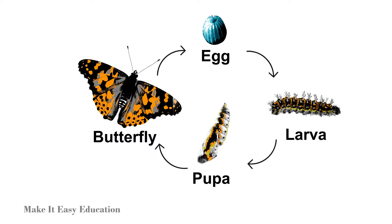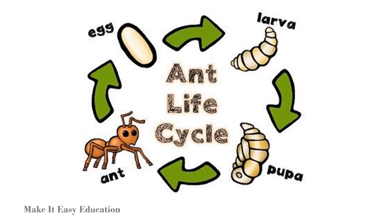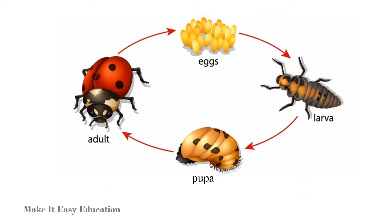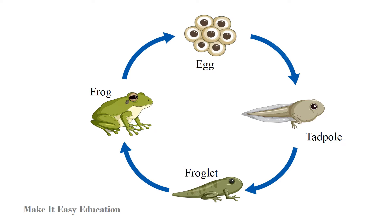Complete metamorphosis. In complete metamorphosis, the animal undergoes complete physical changes in each stage of its life cycle. An animal goes through four different stages: the egg hatches into a larva, a larva develops into a pupa, the pupa is enclosed in a cocoon, and the pupa develops into an adult. Frogs and other amphibians also go through complete metamorphosis, but there is no stage within the cocoon.